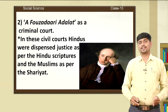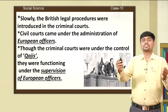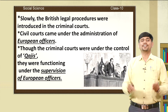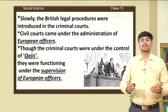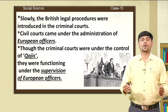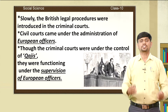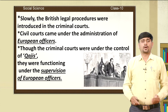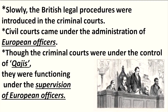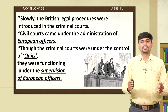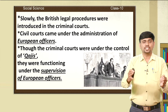Slowly, British legal procedures were introduced in the criminal courts. The British started improving the legal procedures and introduced a new legal code of conduct. The civil courts came under the administration of European officers. Though the criminal courts were initially under the control of local authorities, they were also eventually functioning under the supervision of European officers. With this, the British were able to establish a new judicial system in India.